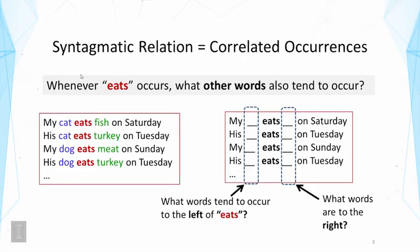By definition, syntagmatic relations hold between words that have correlated co-occurrences. That means when we see one word occurs in the context, we tend to see the occurrence of the other word.